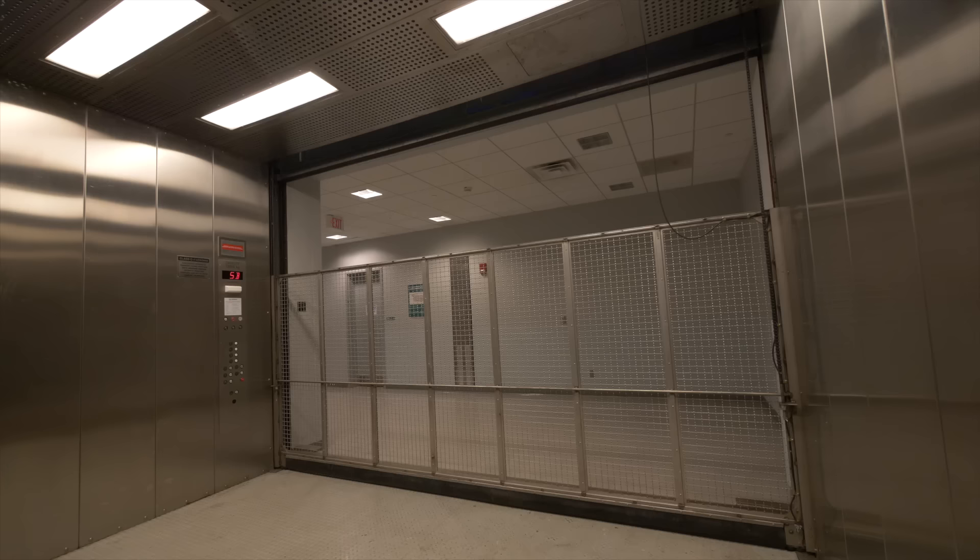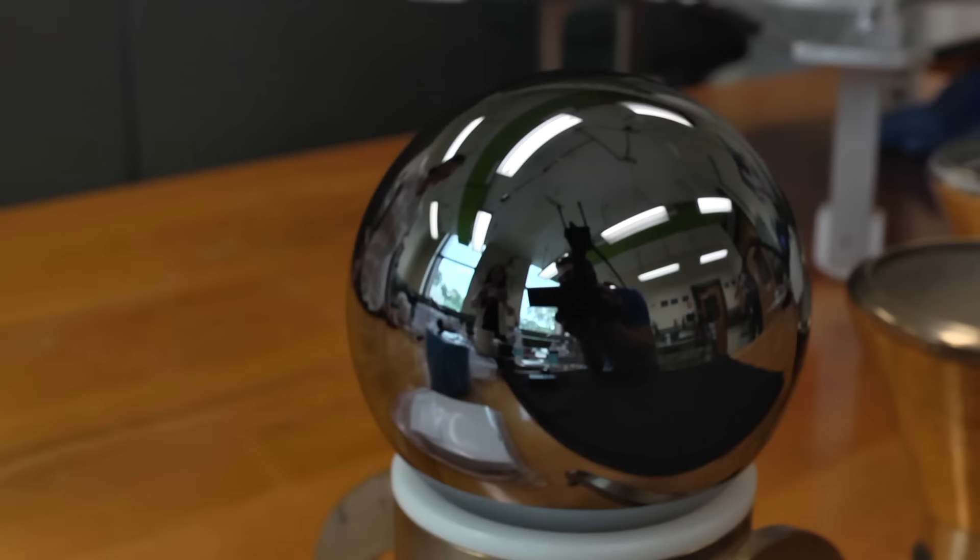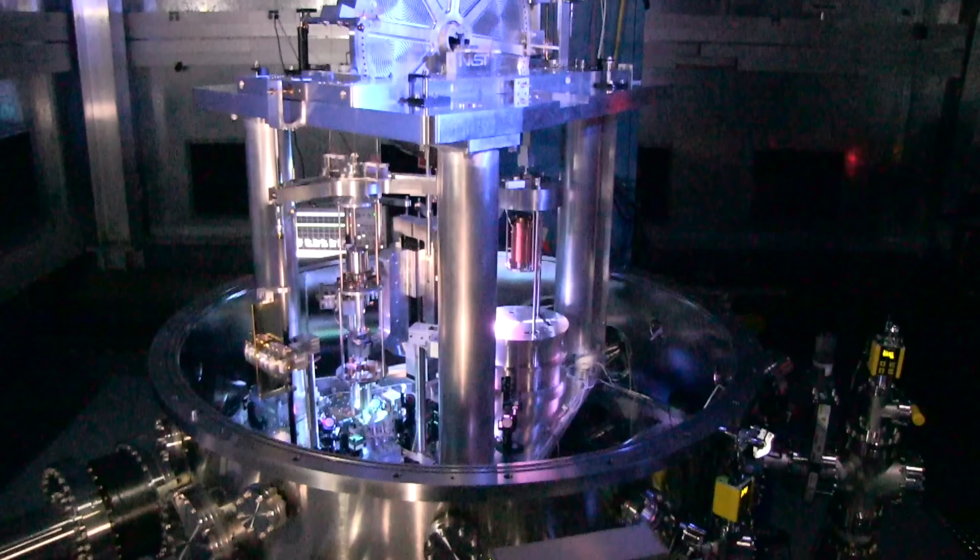So naturally, the thought is to do the same thing with the kilogram, but using which constant and how? Well, there were a number of different strategies that were attempted, but the two that achieved the greatest success were, number one, using a silicon sphere to determine and set Avogadro's number, and number two, to use a watt balance to determine and set Planck's constant.